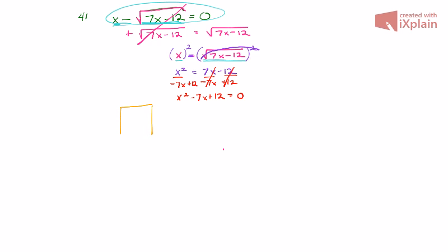So at this point, whether you need to use the box method, or whether you feel comfortable using the AC method, or I think there's a cross method, or if you just prefer to do trial and error, because you've done this so many times that it's just kind of natural for you now. We'll go ahead and see if we can factor this out.